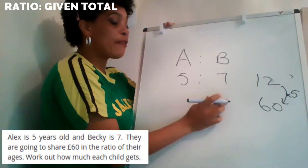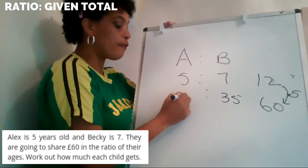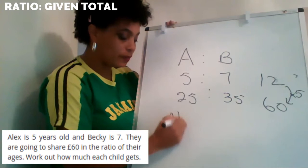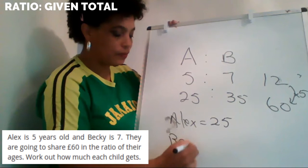So if I times everything by five: seven times five is 35, and five times five is 25. So Alex will get 25 and Becky will get 35. My answer is Alex equals 25 and Becky equals 35.